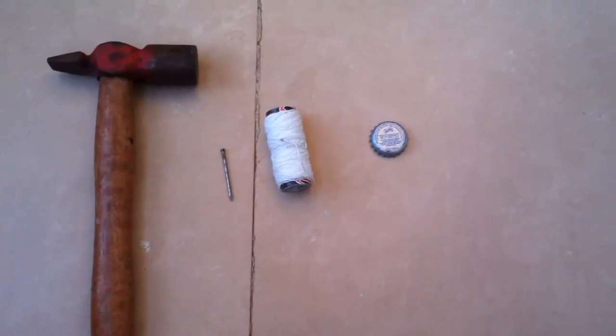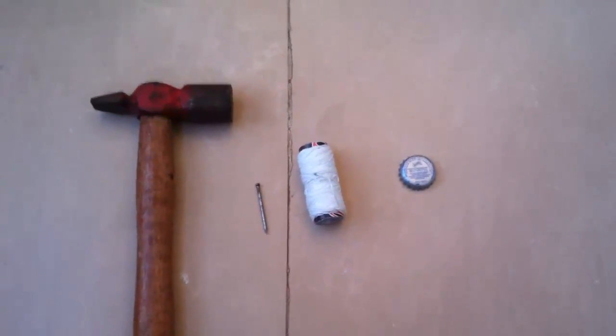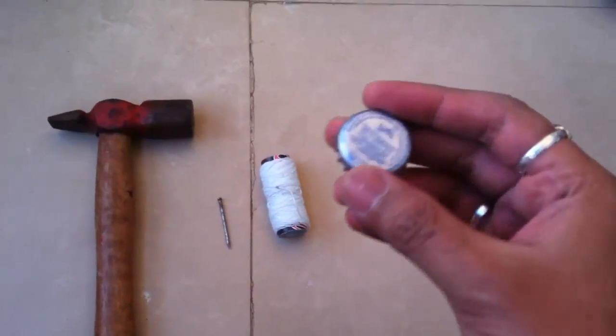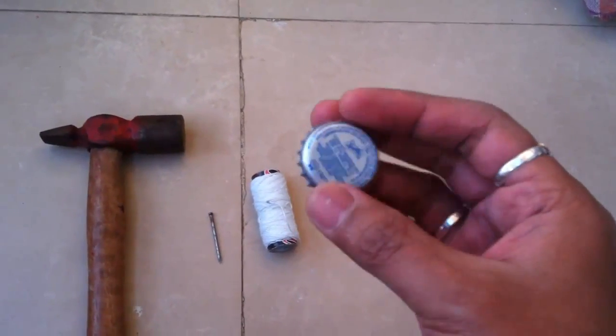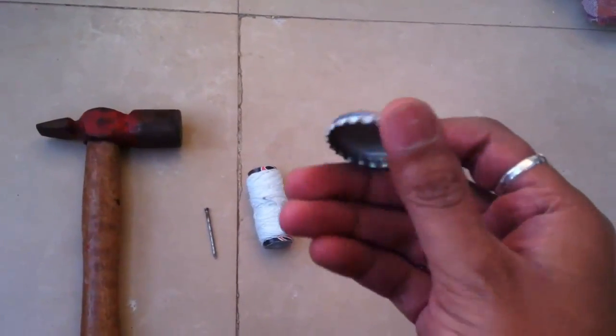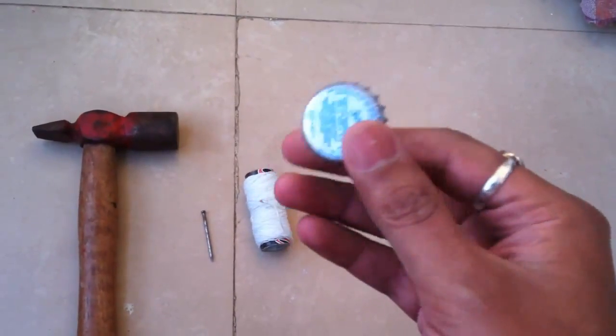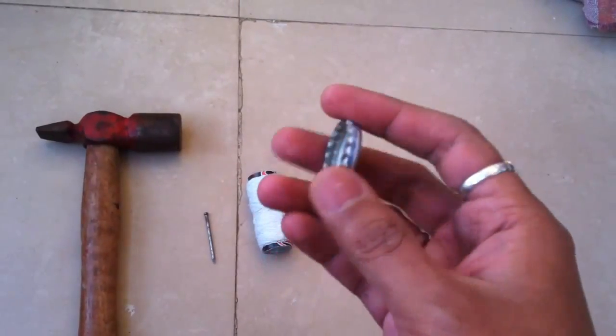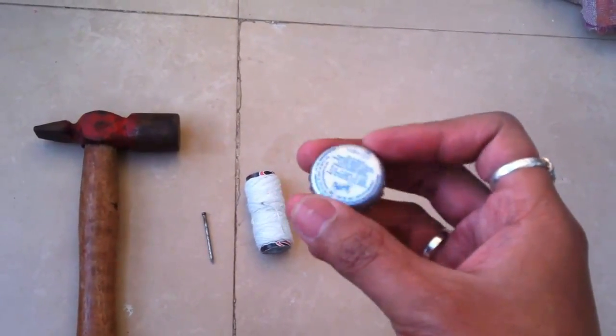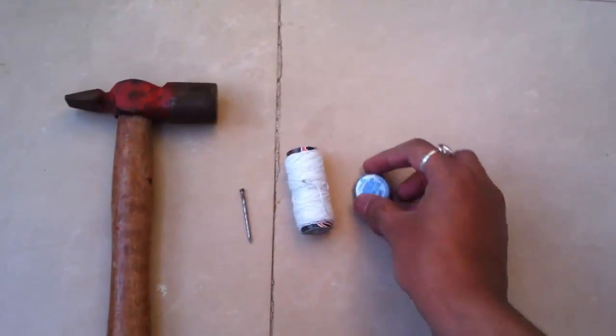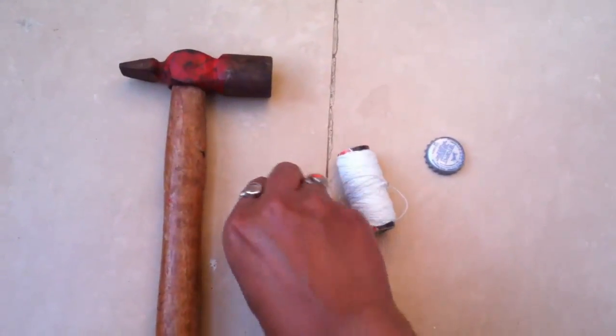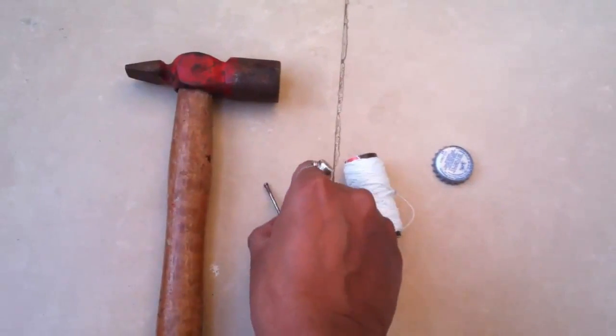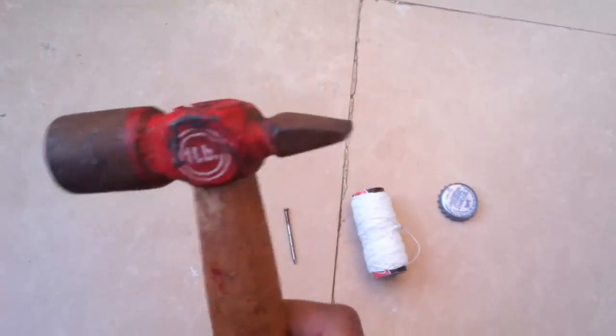Hi, let's make a pull string toy. For the pull string toy you need a cola cap which is metal. You can find it anywhere at the shop, at your home, or in your garage. You'll also need thread, one nail, and a hammer.